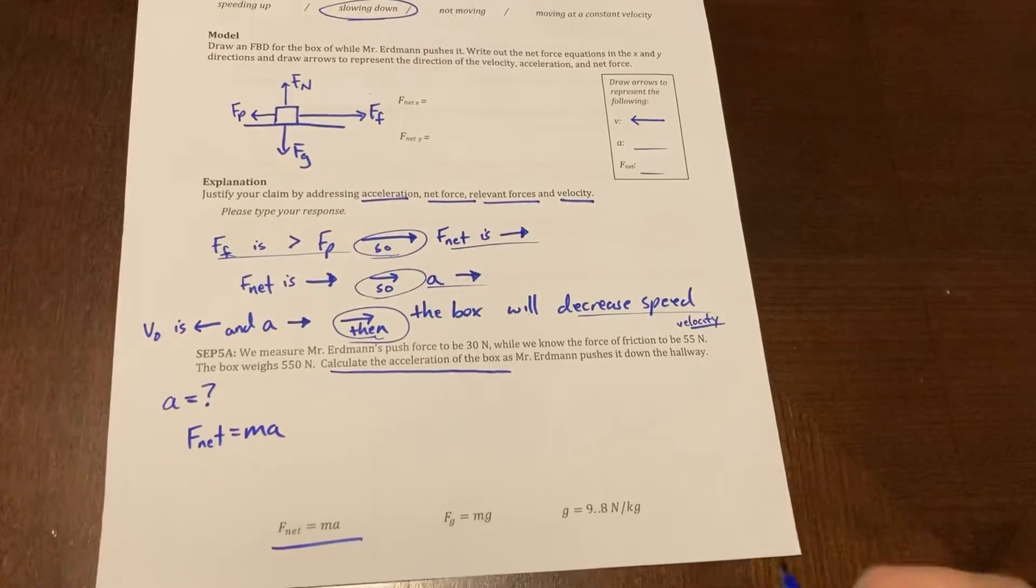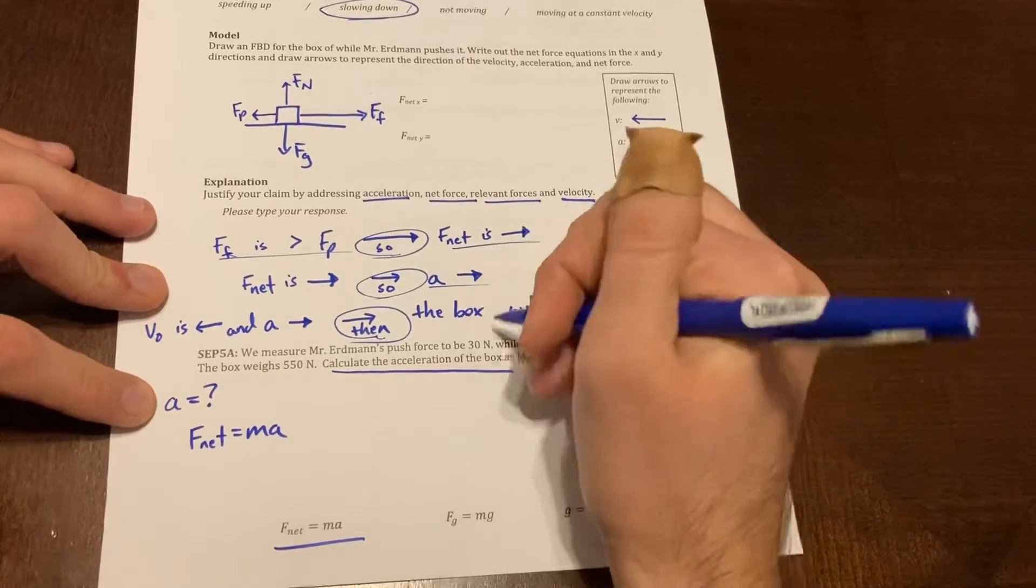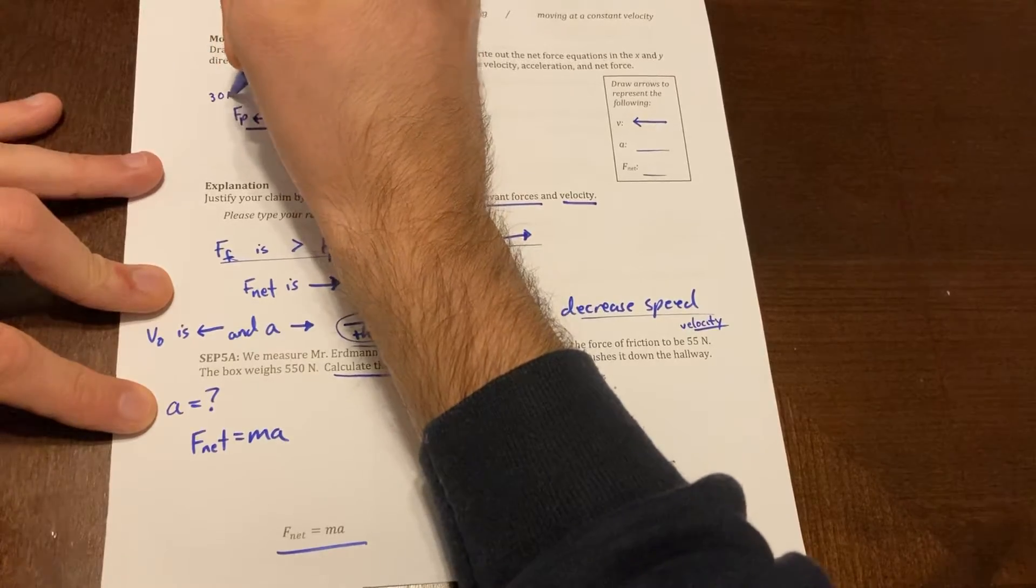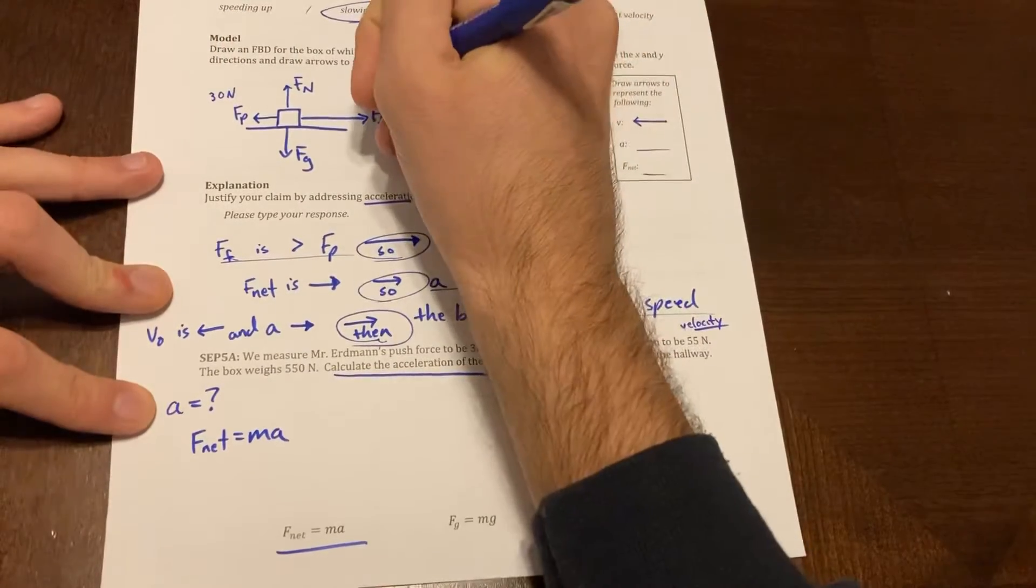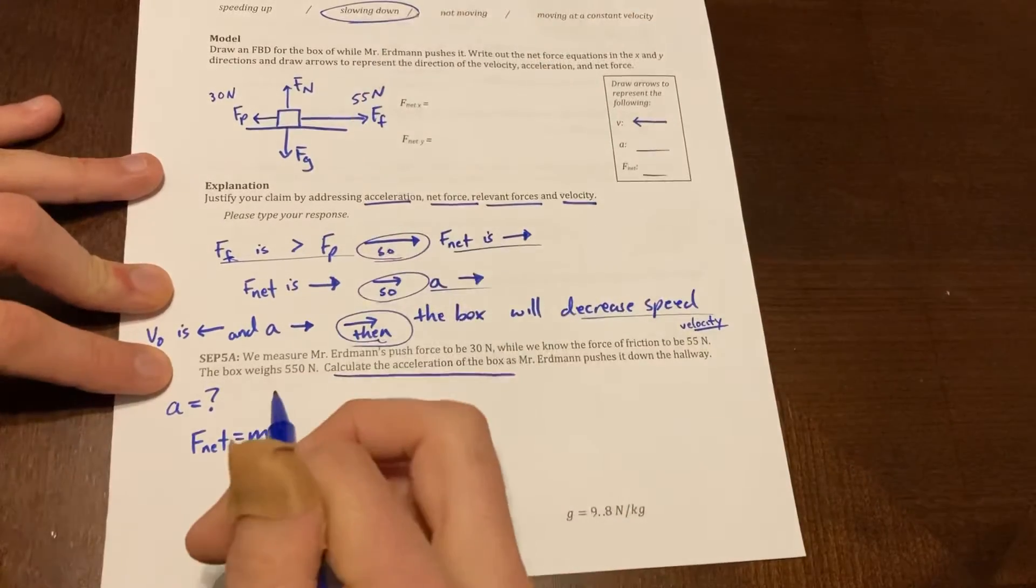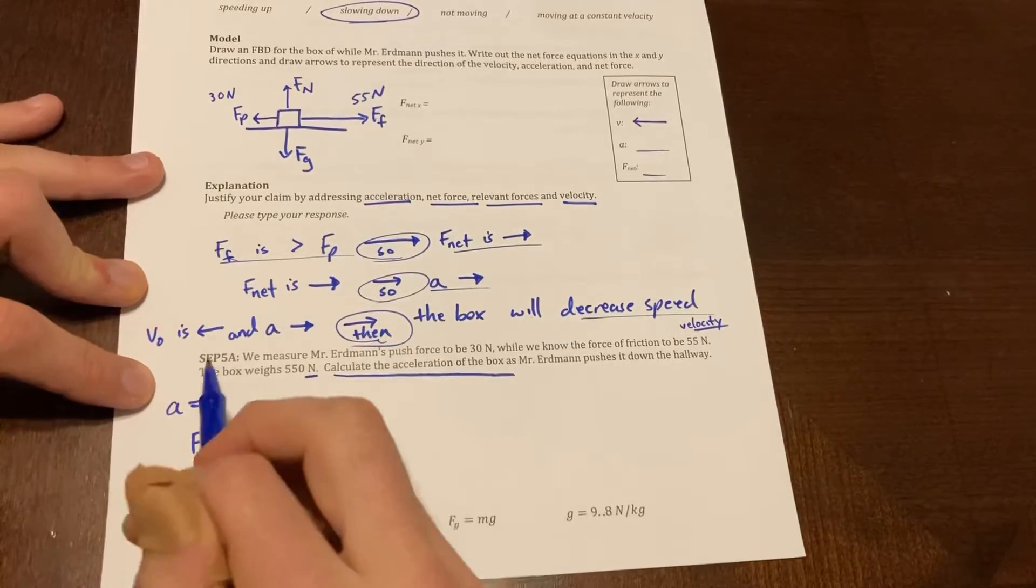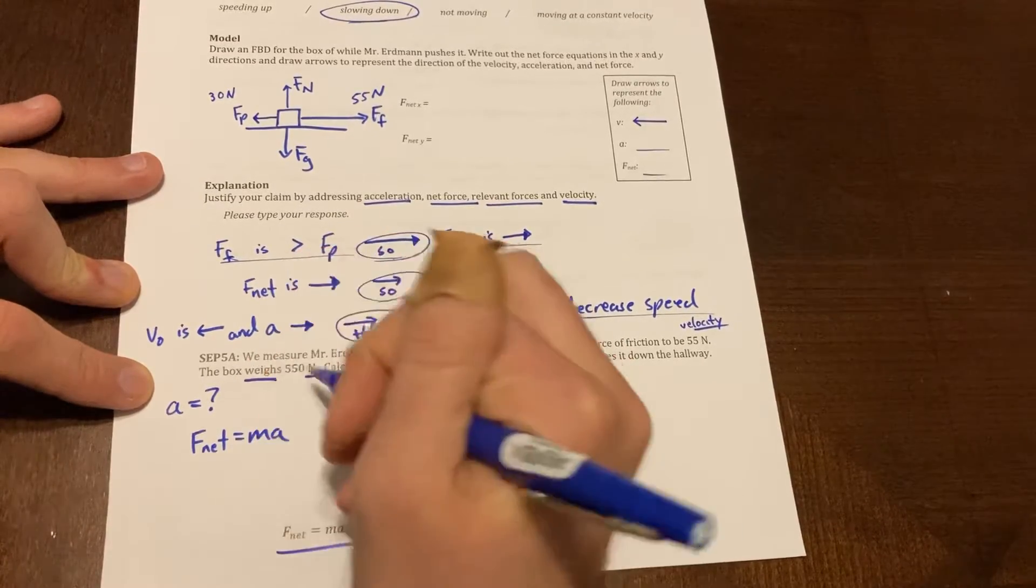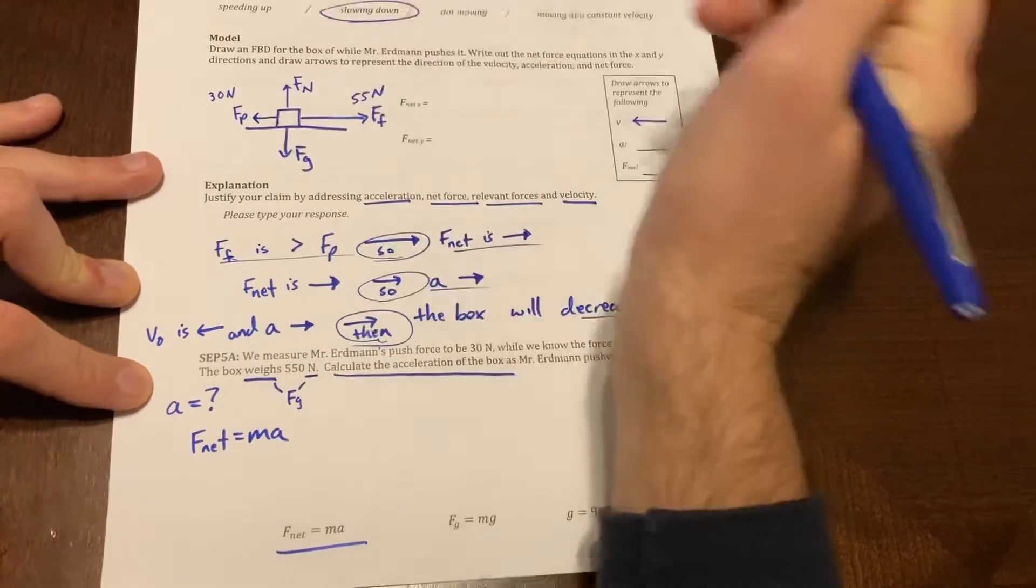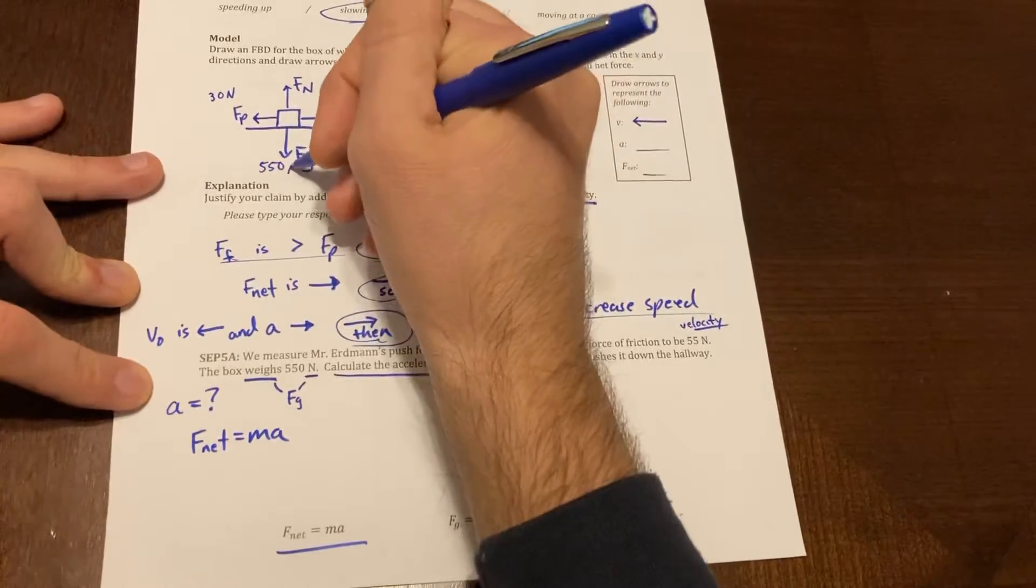In terms of the variables that I do know, we know that the push force is 30 newtons. So if I go back over here I can maybe label this 30 newtons. I know that the force of friction is 55 newtons and the box weighs 550 newtons. Remember newtons is a force, so we know that this is not the mass and weight is also the force of gravity. So two clues that tell me that this is the force of gravity being 550 newtons going downwards.